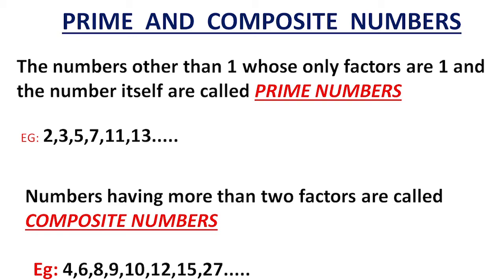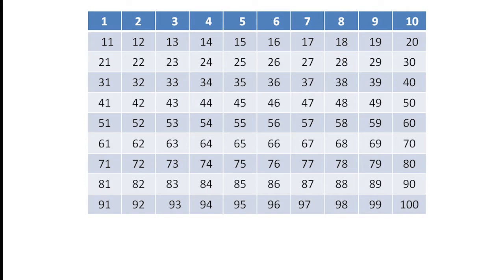Next, we are going to find out the prime numbers between 1 and 100. I have made a table consisting of the numbers from 1 to 100. What we are going to do is cross out all the composite numbers and circle all the prime numbers. The number 1 has only 1 factor, so it is neither prime nor composite. So we have to cross out 1, because it is not a prime number.